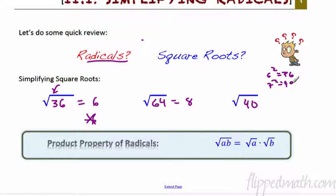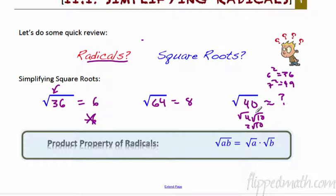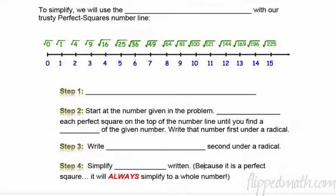7 squared is 49, so it's somewhere in the middle, kind of closer to 6 — maybe 6.4. I can't get the exact value. But what we want to do this whole lesson is pull perfect squares out of the square root. So out of 40, I know that is the square root of 4 times the square root of 10, and the square root of 4 simplifies to 2 radical 10. We're going to use the product property of radicals, which means you can take two factors that multiply to 40 and break them up. We took 40, broke it into 4 times 10, and the 4 will simplify.